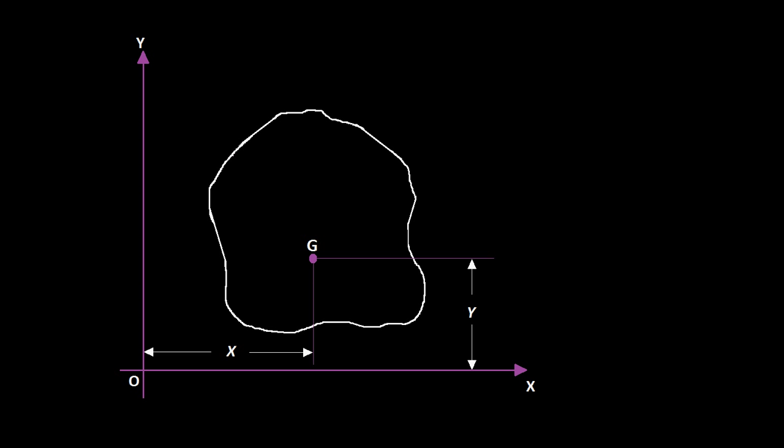We discussed finding out the moment of a force in the previous videos. How do we find the moment of an area, moment of volume, or a mass? For areas and masses there is a term centroid or center of gravity, which we discussed previously. The area is concentrated on the centroid and mass or volume is concentrated at the center of gravity.